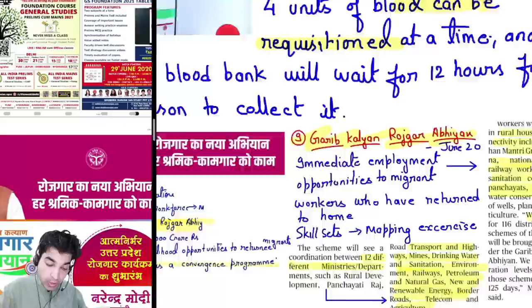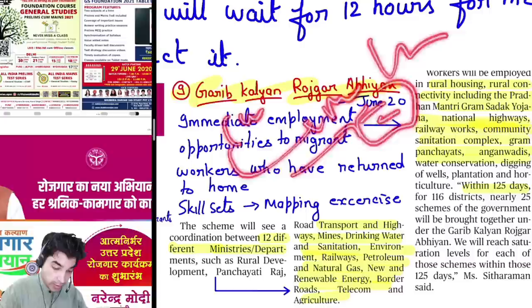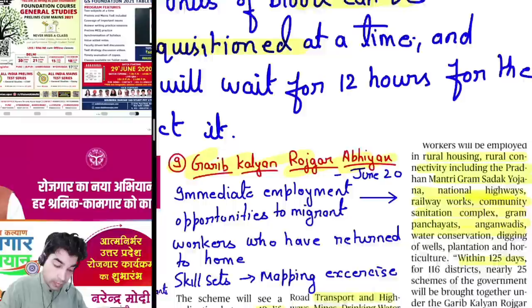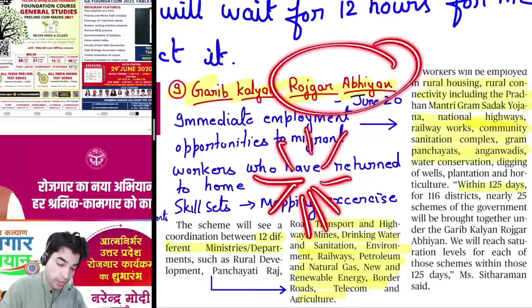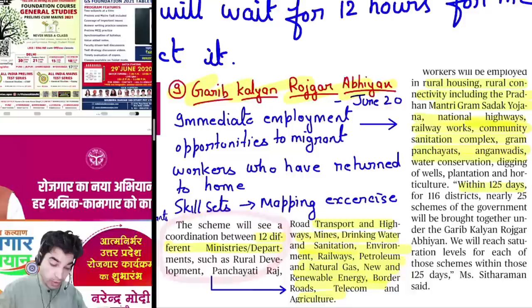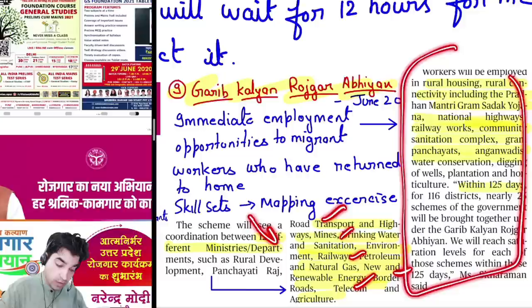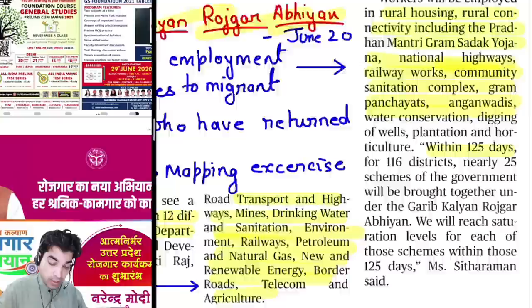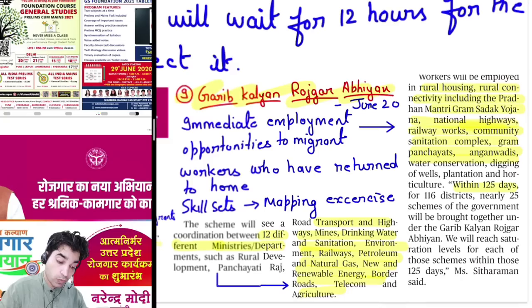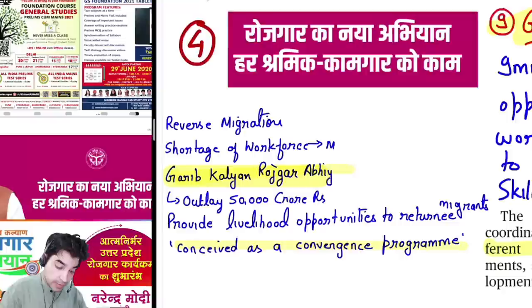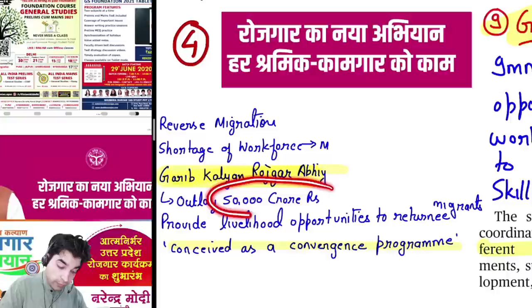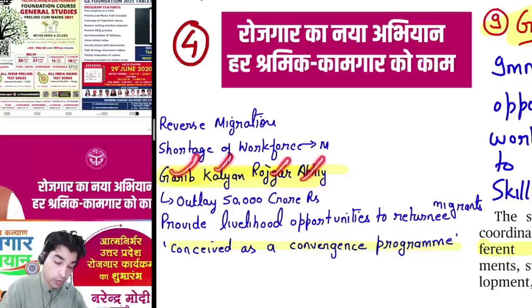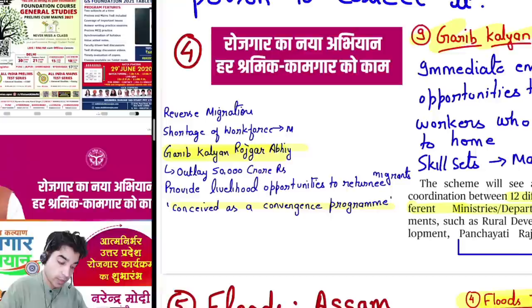Fourth news: Garib Kalyan Rojgaar Abhiyan — a new employment scheme. Because of COVID-19, reverse migration happened — many migrants returned to their villages. Now providing employment to them is a big challenge. On June 28th, the government launched the Garib Kalyan Rojgaar Abhiyan. This scheme is basically a convergence program coordinating different ministries and their programs. Various ministries together will generate a large amount of work and employ migrant workers. The scheme is targeted for 125 days.